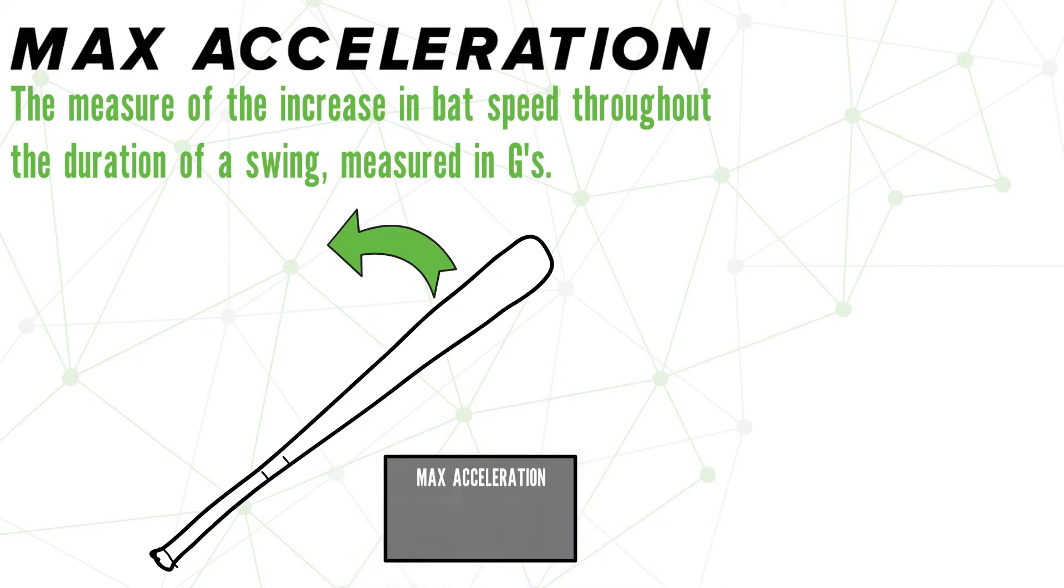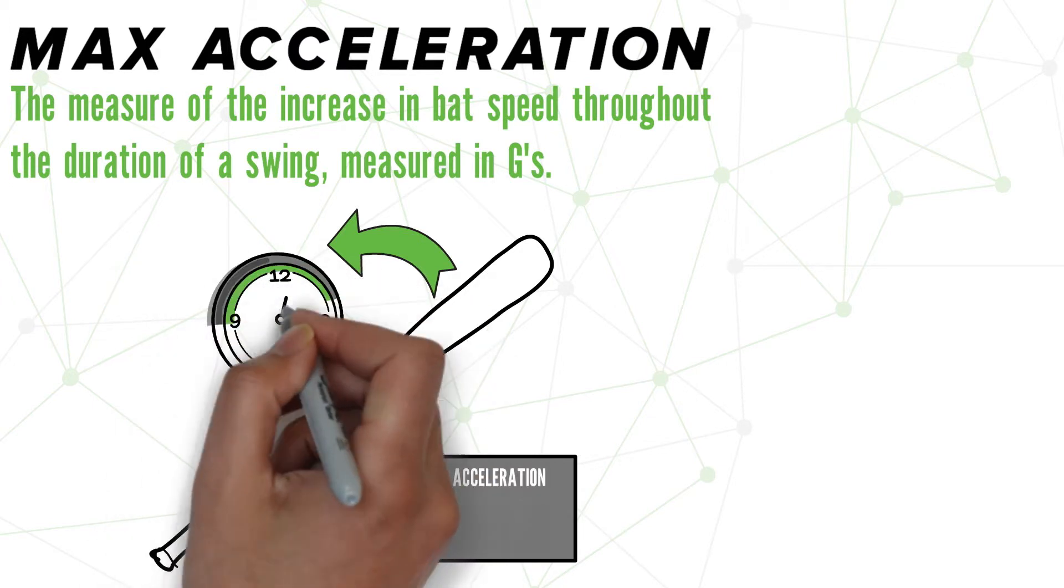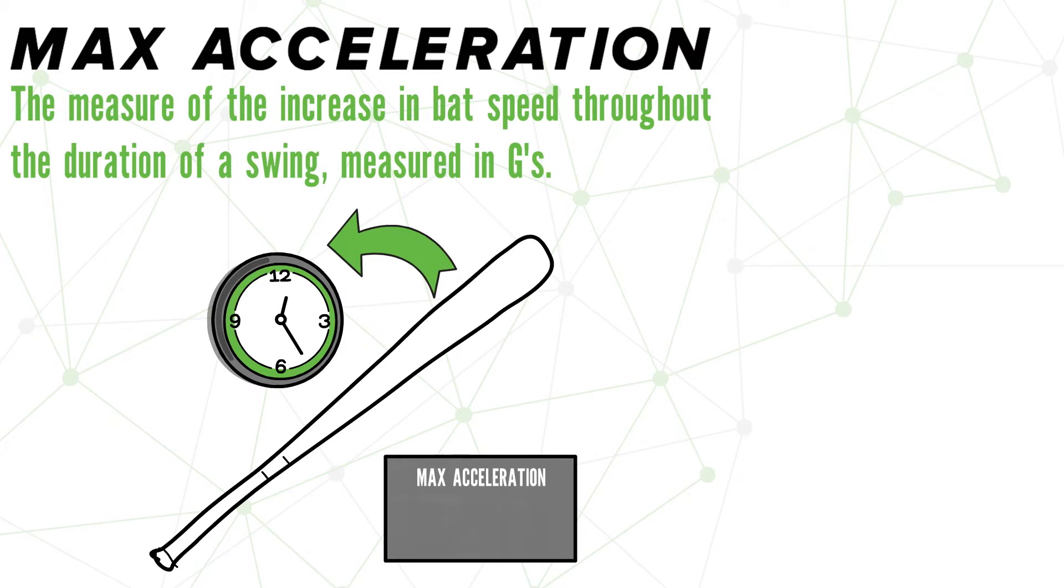Acceleration is measuring how quickly a hitter can reach that max speed. Good numbers here are important because the quicker you can accelerate that bat, the more time you have to make a decision to swing, or adjust to an off-speed pitch.